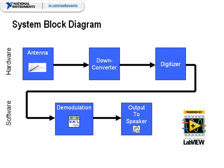Now that we have a general idea of how we create an FM signal, let's look at how we can actually decode the signal and get it back into our original signal, which is what we'll be doing during this demonstration. First, with our hardware, we bring the signal in through an antenna into a down converter. This down converter takes the carrier signal frequency range and brings it down to our digitizer — down to about 15 kHz, what we call the intermediary frequency. The digitizer then converts this analog signal to a digital signal that can be passed into software. In software, using LabVIEW and our modulation toolkit, we demodulate the signal back down to the original baseband and decode it into its original sound wave so that we can output it to our speakers.